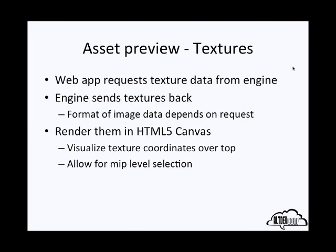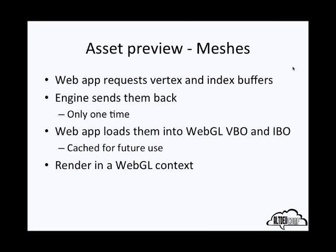For meshes, the web app requests the vertex and index buffers associated with the mesh. The engine sends them back only one time, because the web app then loads them into a WebGL VBO and IBO, which are cached for future use. You can then render them in a WebGL context.